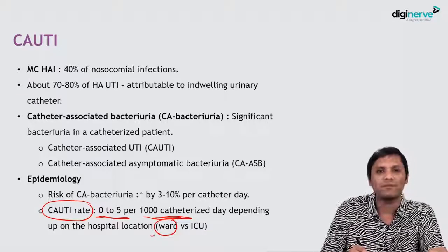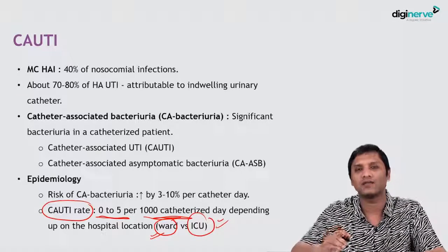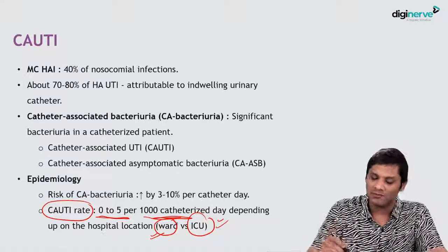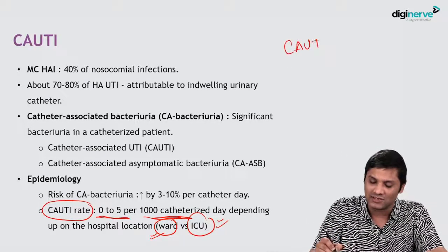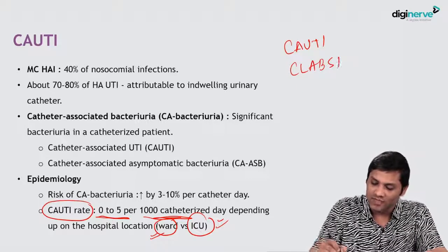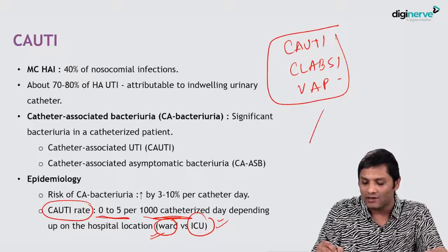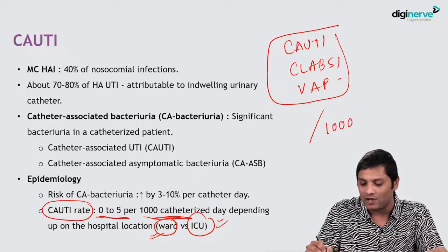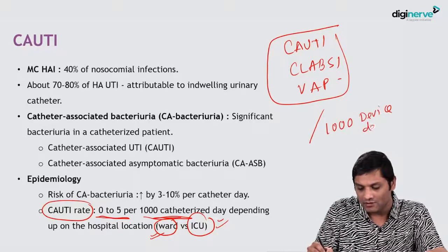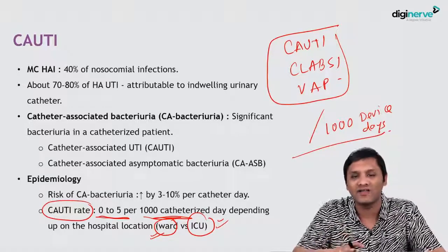All device-associated infections — CAUTI, CLABSI, and ventilator-associated pneumonia — are expressed per 1000 device days. Device days means the total count of how many patients in a day are on a given device, summed over a duration.